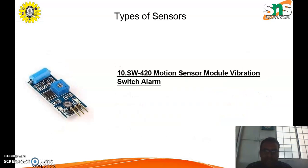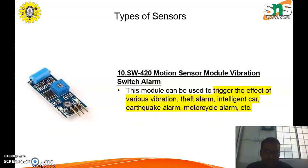The next type is the motion sensor module vibration switch alarm. This module can be used to trigger the effect of various vibrations, including depth alarm, intelligent car, earthquake alarm, motorcycle alarm, and more.